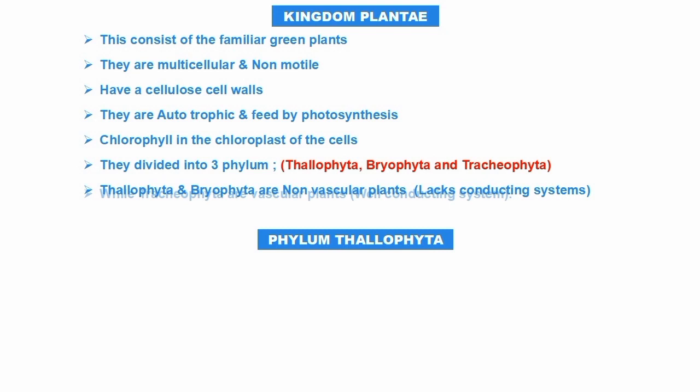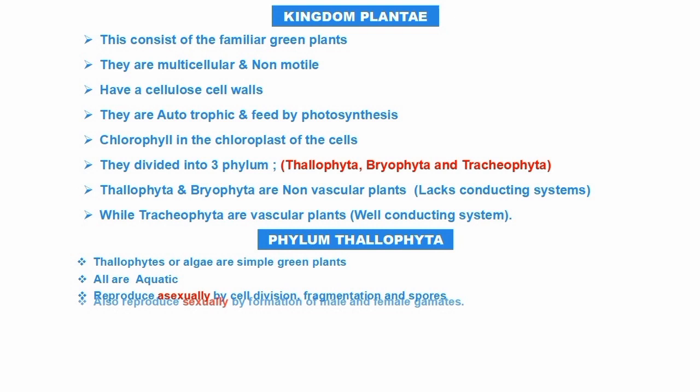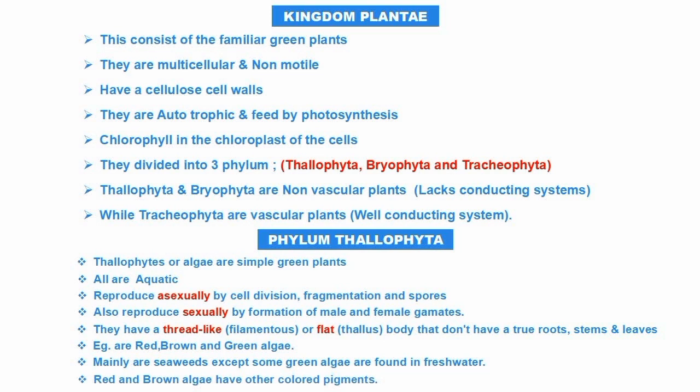Thallophyta and Bryophyta are non-vascular plants — they lack a conducting system. Tracheophyta are vascular plants with a well-developed conducting system. A vascular plant is one that can conduct material from the roots or stem to other parts of the body. Now we are going to talk about the first phylum: Thallophyta.